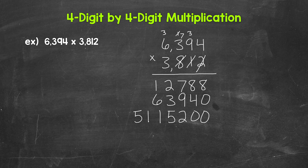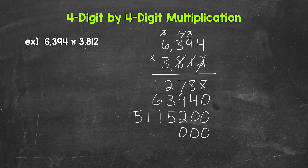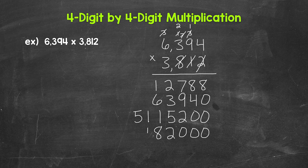Now we are done with this 8 and we move over to the 3 in the thousands place. That 3 has a value of 3,000, so we need 3 zeros. Now we can multiply: 3 times 4 is 12 — write the 2, carry the 1. Then 3 times 9 is 27, plus 1 is 28 — write the 8, carry the 2. Then 3 times 3 is 9, plus 2 is 11 — write the 1, carry the 1. Then 3 times 6 is 18, plus 1 is 19. So 6,394 times 3,000 gives us 19,182,000.